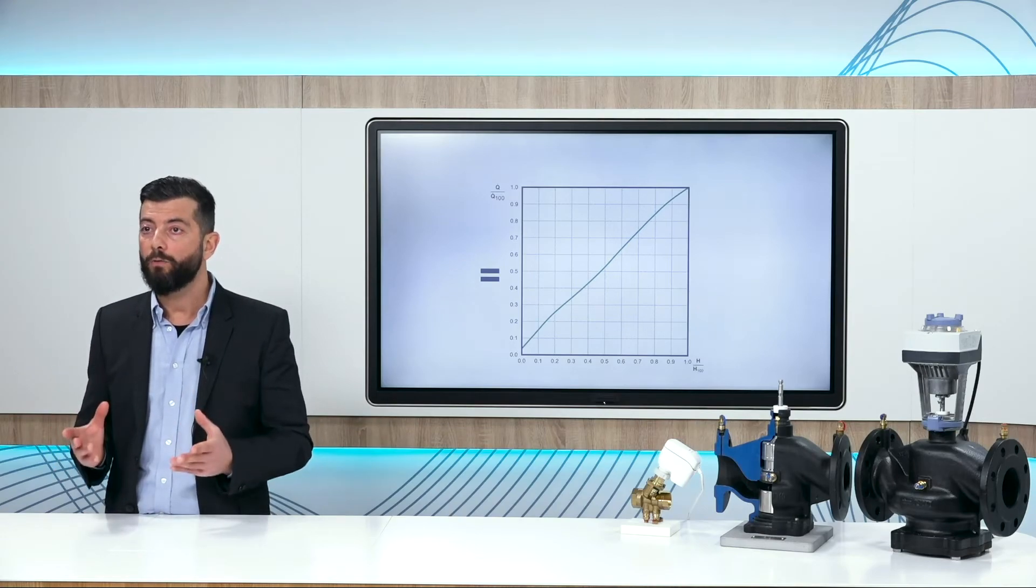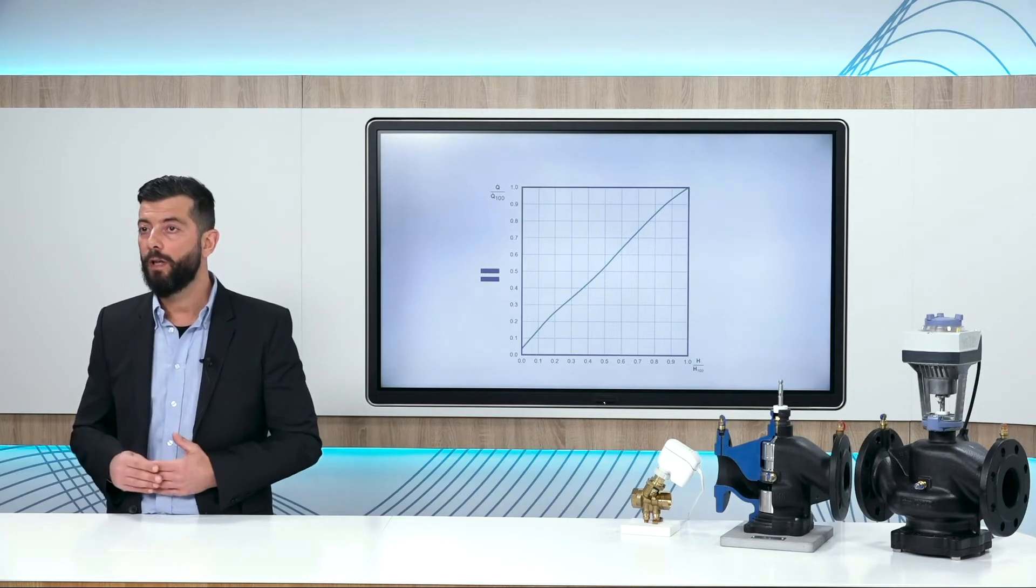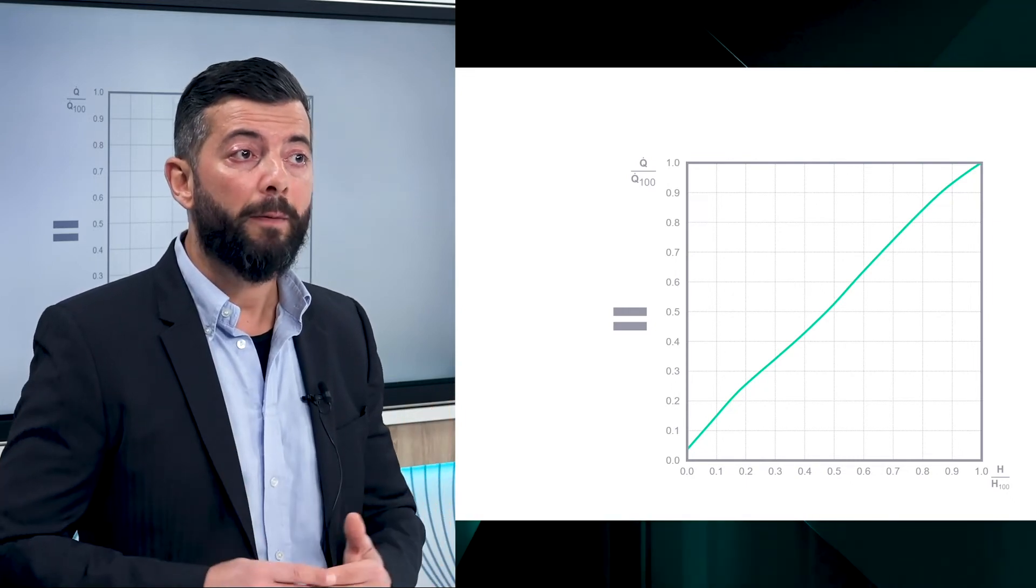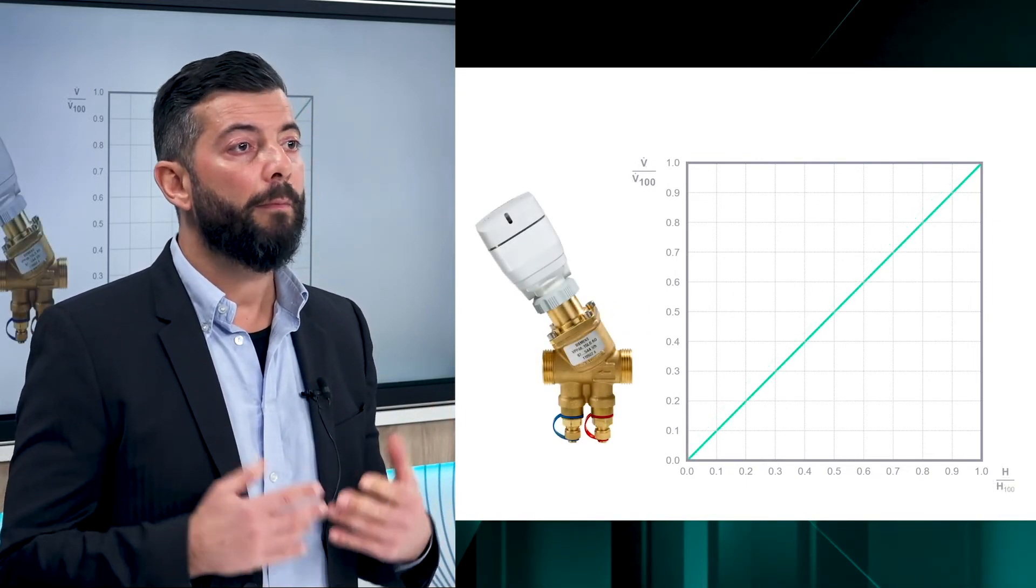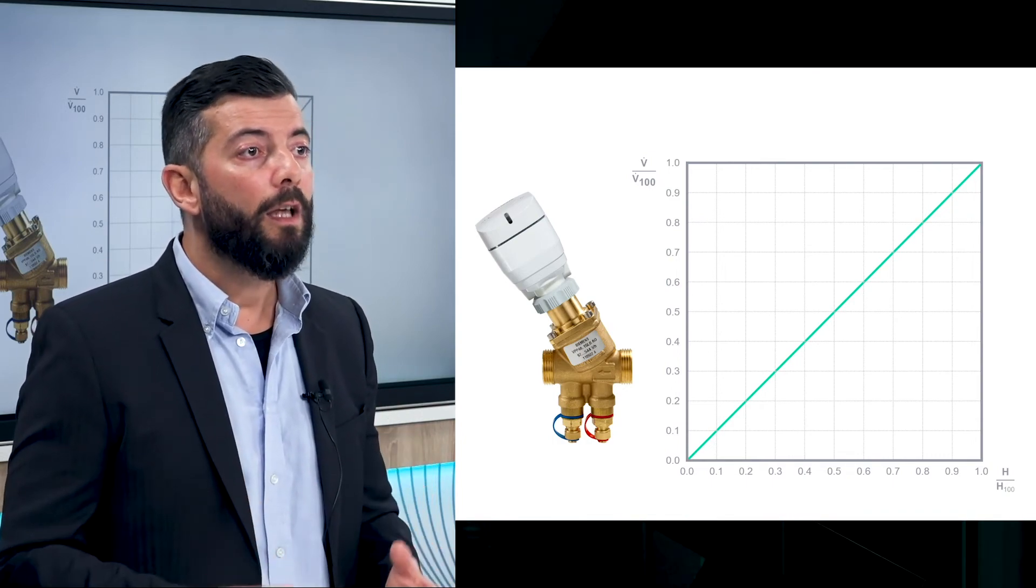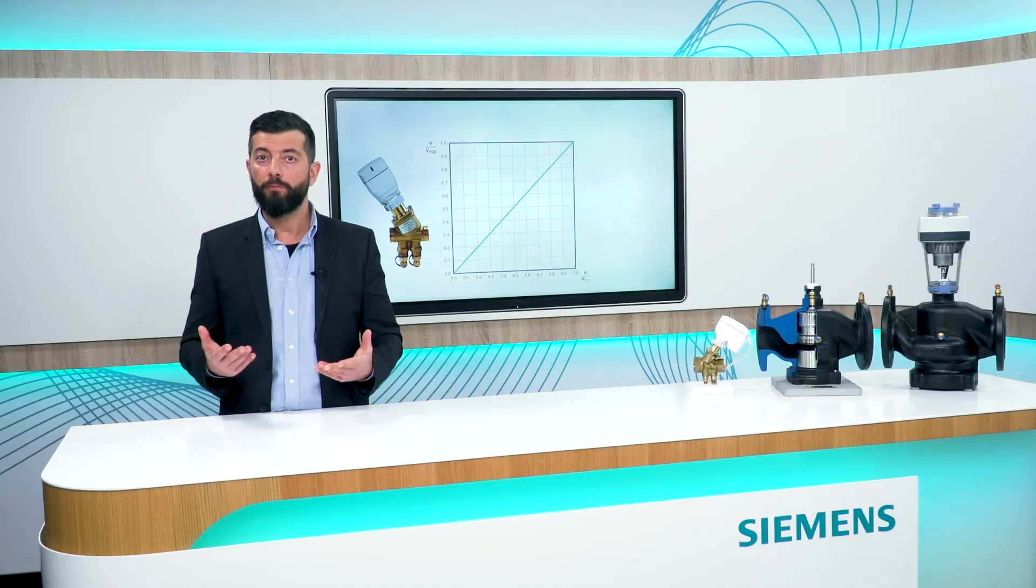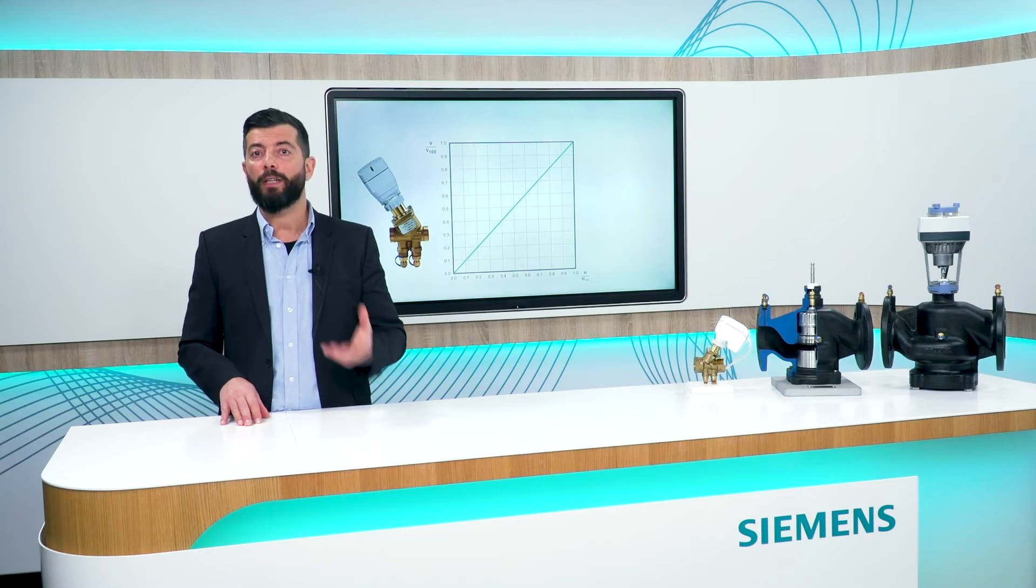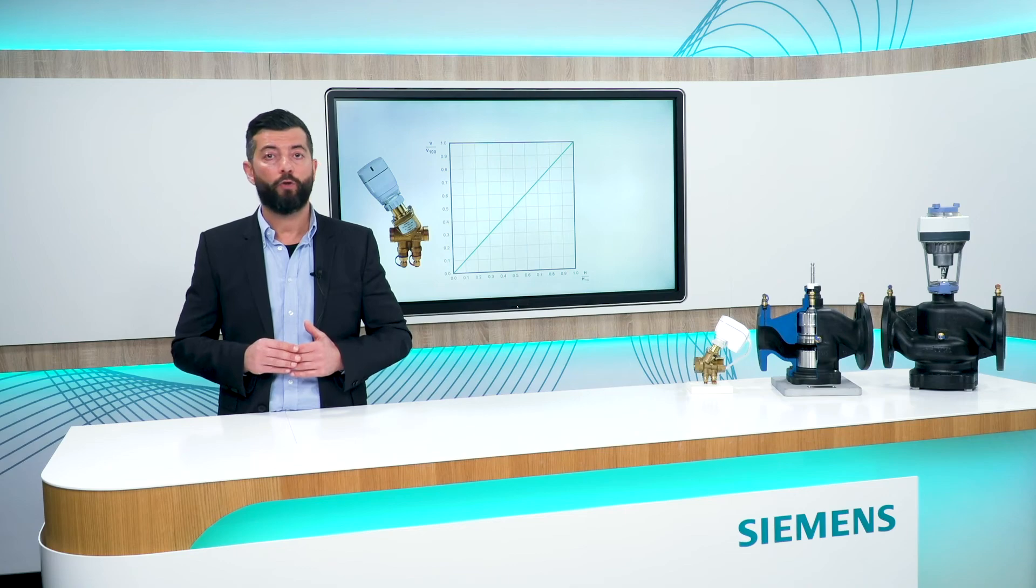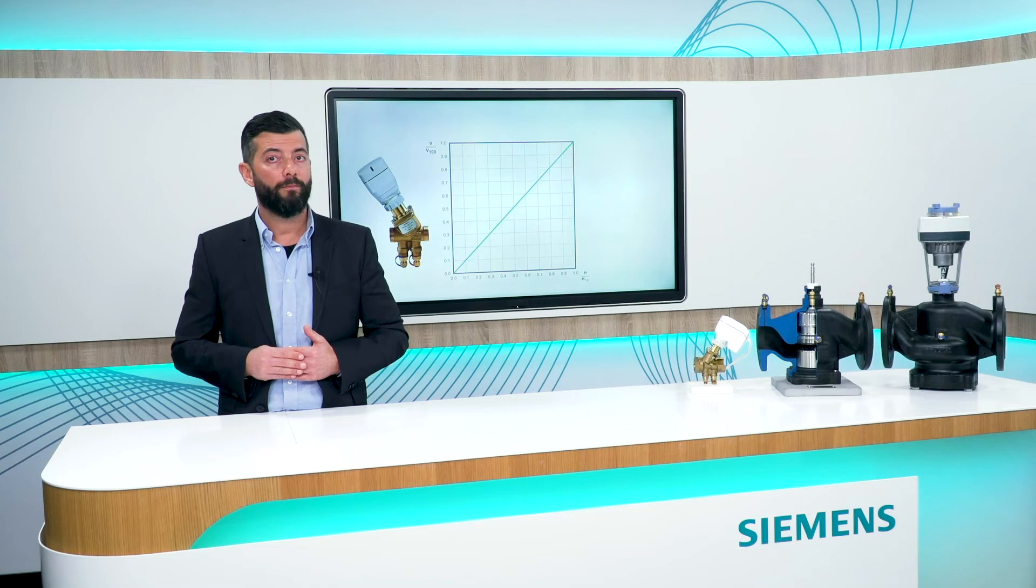And you also have to take into account that a linear valve can be made equal percentage by an actuator. But the opposite is more complicated. And for this reason, most dynamic balancing valves in the market come out of the factory with a linear characteristic, so that they can be combined with a linear actuator and produce a linear response. And you can also combine this same valve with an equal percentage actuator for all those coils that require an equal percentage control characteristic, in order to get a final linear control response, for example, fan coils.